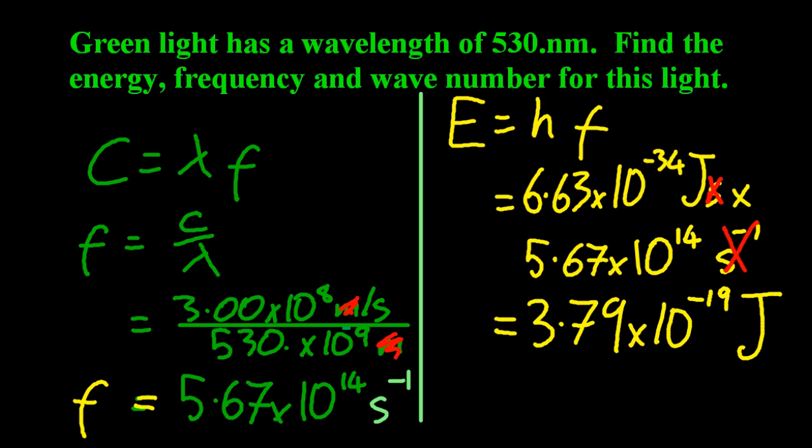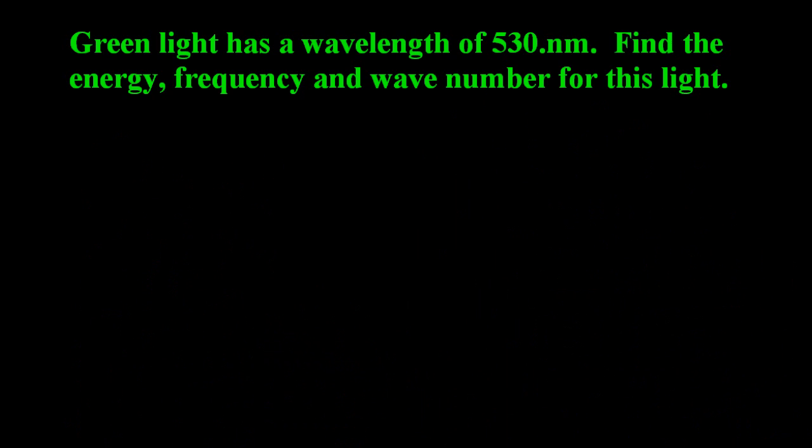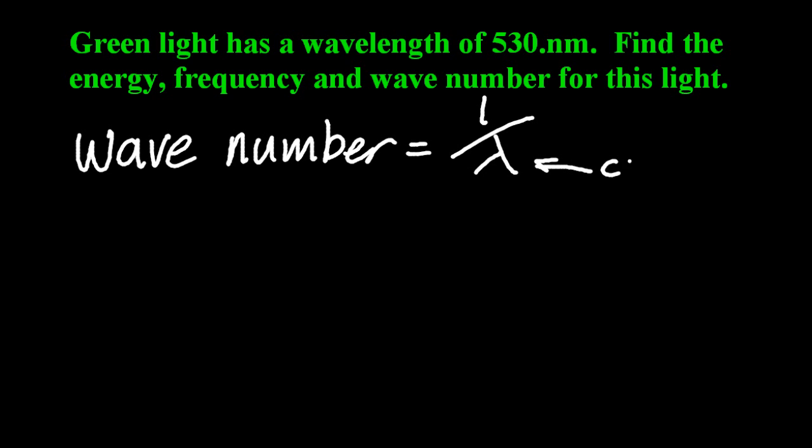And the final equation gives me the wavenumber. Oh, there's a little photon there. So wavenumber is 1 over the wavelength, and it's got to be measured in centimetres, the wavelength. A little bit of conversion to get to metres.